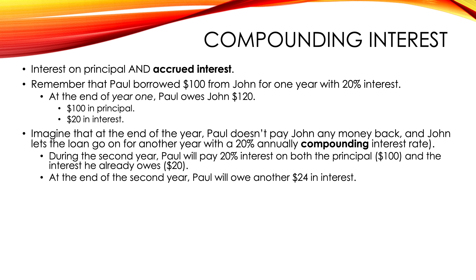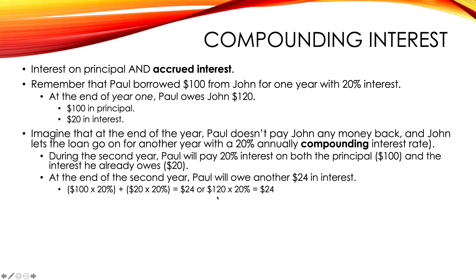At the end of the second year, Paul is going to owe another $24 in interest to John. He's paying 20% interest on the principal — the original $100 — and 20% interest on the $20 in interest he already owes. 20% times 100 is 20. 20% times 20 is 4. And 20 plus 4 is 24. You could also just take the total amount Paul already owed from year one — $120 — and multiply that by 20%, which also gives you 24.